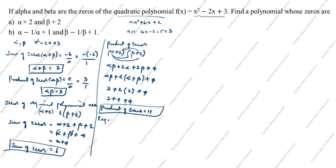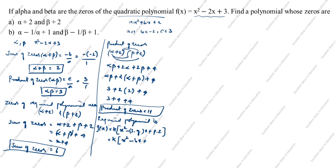The required polynomial is g(x) = k[x² - (sum of zeros)x + (product of zeros)] = k[x² - 6x + 11]. This is the final answer for part A.